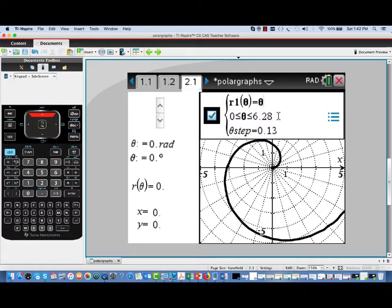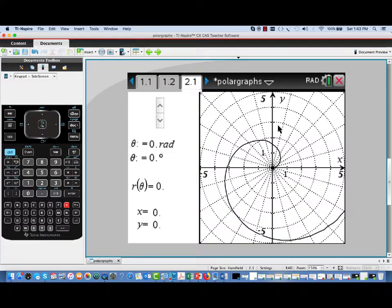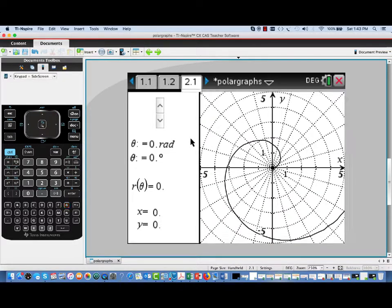And if we now return to the graph and trace it using these sliders, you can see that as I increment theta, you'll see a radial arrow pointing to the corresponding point on the polar graph.